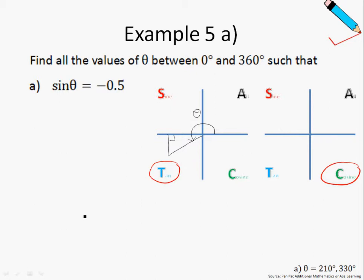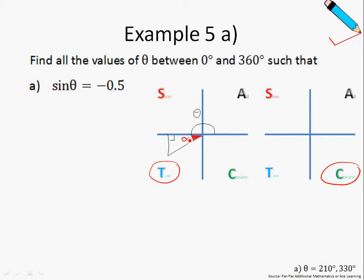For the first example, let me identify our alpha. The basic angle alpha is always measured with respect to the x-axis or the horizontal axis, and this red angle you see here is my angle alpha.